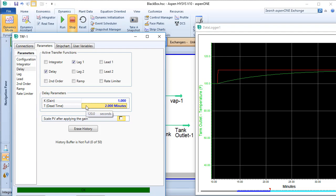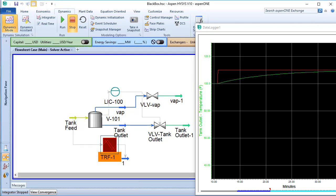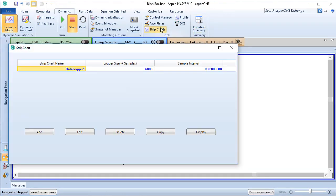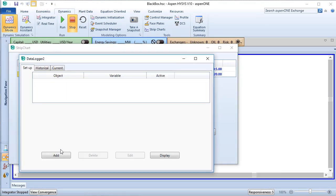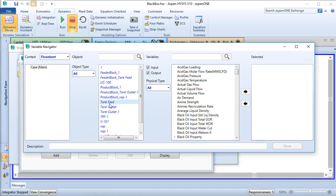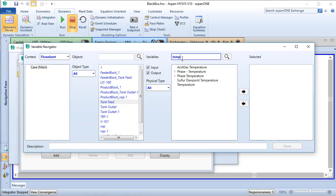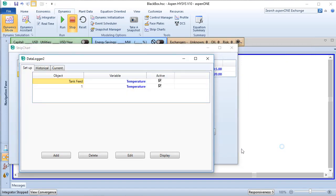Before running the case, create a strip chart with the inlet and outlet temperatures so we can monitor what's going on. Click the Strip Charts button, click Add, and add the inlet and outlet temperatures from the streams attached to the Transfer Function block. Click Done, then display the strip chart.